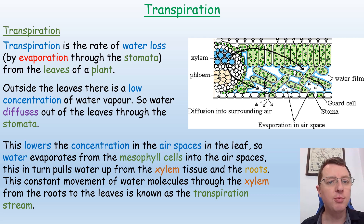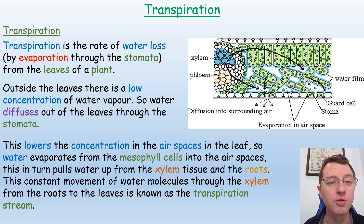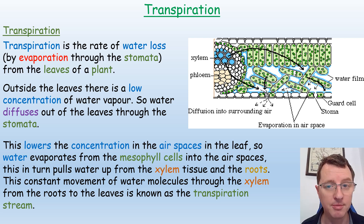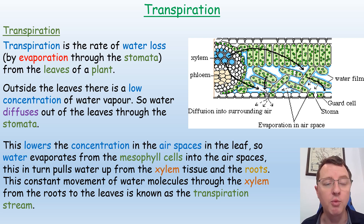Transpiration is the rate of water loss by evaporation through the stomata from the leaves of a plant. How does this work? Why is it that we lose water through the stomata?